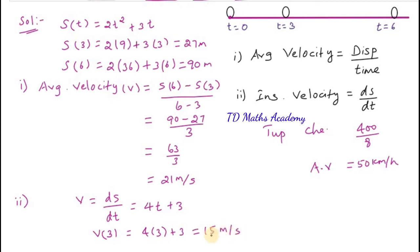So 15 meters per second is the instantaneous speed at the third second — like what a speedometer reads at that particular moment. The differentiated equation ds/dt equals 4t plus 3 gives v of 3 equal to 15 meters per second, the instantaneous speed at time equal to 3 seconds.